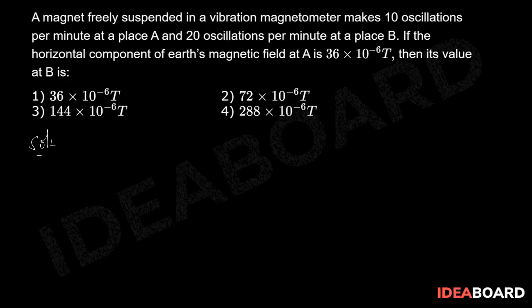a magnetic needle or a magnetic dipole in the presence of the horizontal component of Earth's magnetic field is given by T = 2π√(I / M·BH). For a given magnetic dipole, the moment of inertia I and magnetic moment M will be the same.